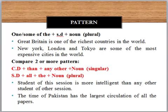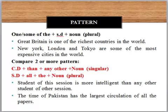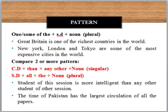One pattern is using 'one' or 'some' with a superlative degree. For example: Great Britain is one of the richest countries in the world. 'Richest' is the superlative degree. You can also use 'some': New York, London and Tokyo are some of the most expensive cities in the world. You can use 'some of the most expensive cities in the world' to describe countries or cities you want to talk about.